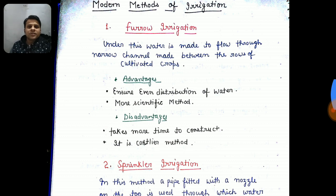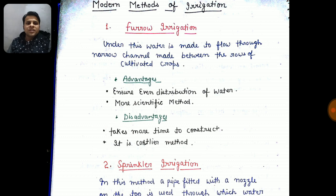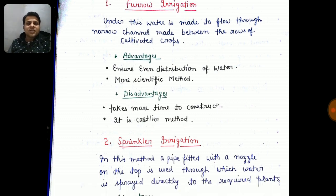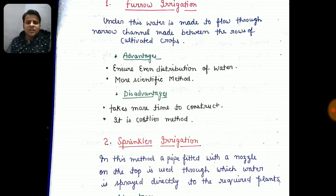In furrow irrigation, it ensures even distribution of water so that all plants receive a proper, evenly distributed water supply. It is a more scientific method. Now if we talk about disadvantages, it takes a lot of time to build and construct. It is also a costlier method, and there is a lot of effort required to carry out the irrigation.